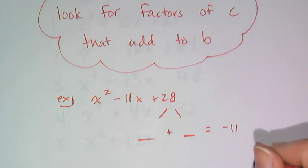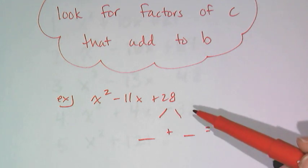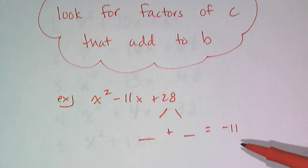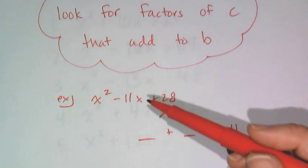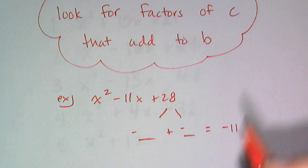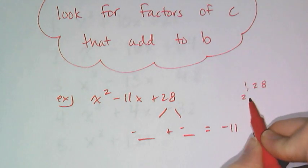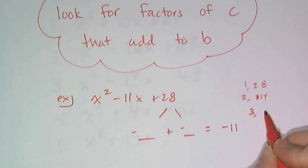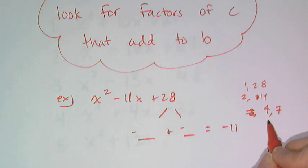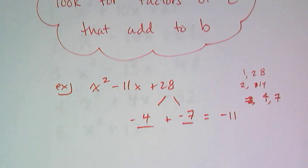I know that when you add them together, they're negative 11, and that when you multiply them together, they're a positive 28. And the only way to get a negative sum when you have a positive product is if both numbers are negative. So it's negative something plus negative something. And then I just have to run through the factors of 28. It's obviously not 1 and 28. It's not 2 and 14. It's not 3 and nothing. 4 and 7, well hey, 4 and 7 adds to 11.